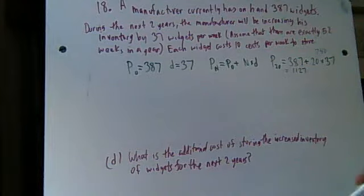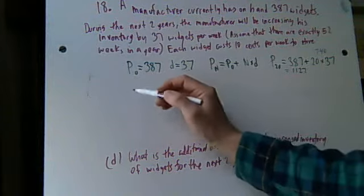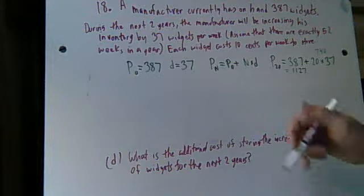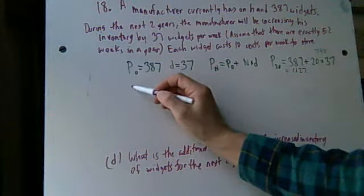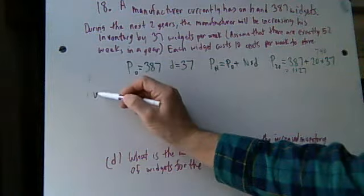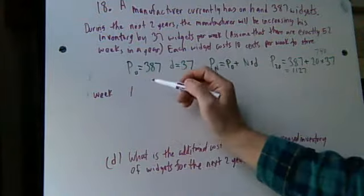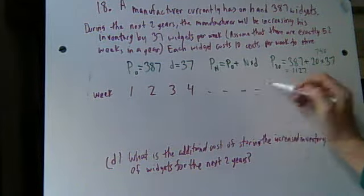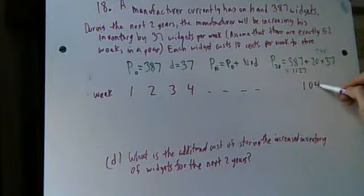To do this one, first what I would do is write out the sequence here in a table. I would say, for example, first I would write down week number 1, week number 2, week number 3, week number 4, dot dot dot, out to week number 104. There are 104 weeks.